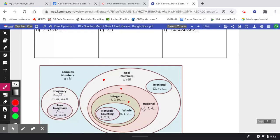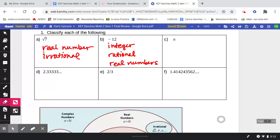Looking down here, we see that pi falls within the irrational number section. So we could say that pi is a real number, but it is also irrational.